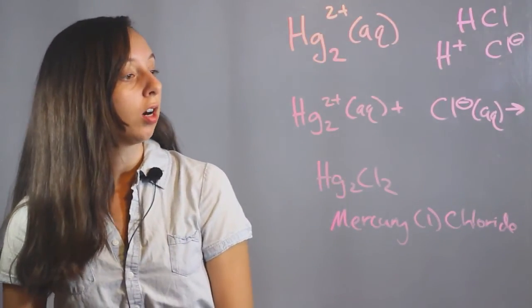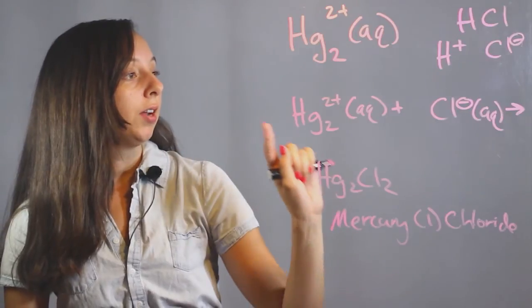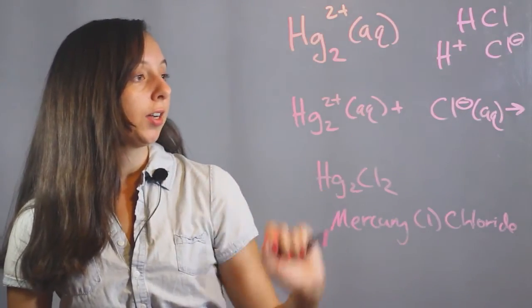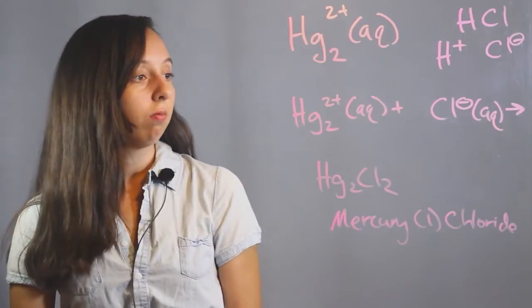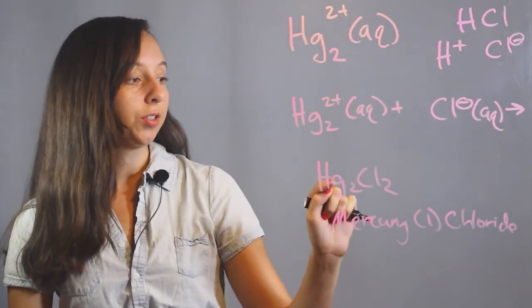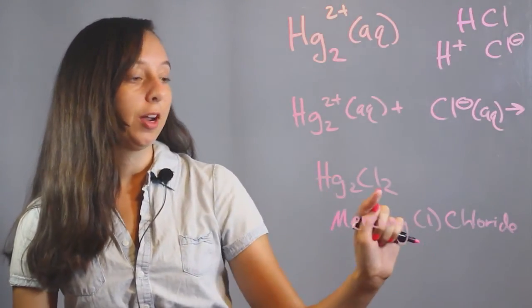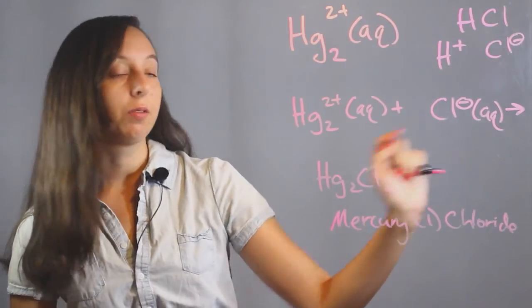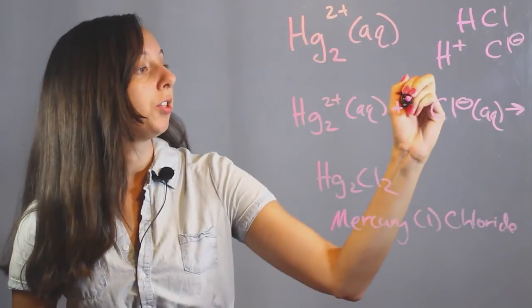So we're almost done. We've got our ions, our product, and all we need to do is balance. So we've got the correct number of mercuries, that's two, but we see in our product we have two chlorines, and here we only have one, so to balance we added two here.